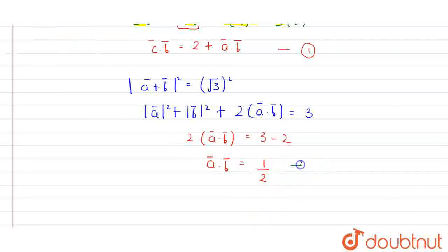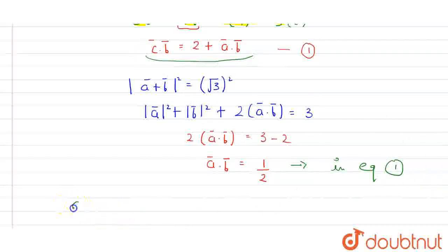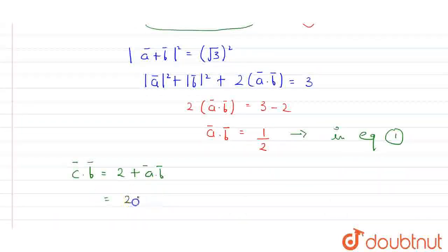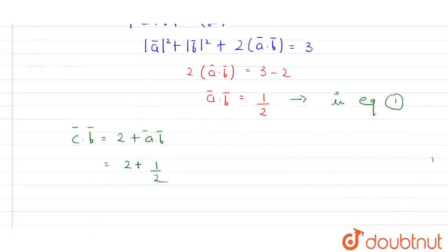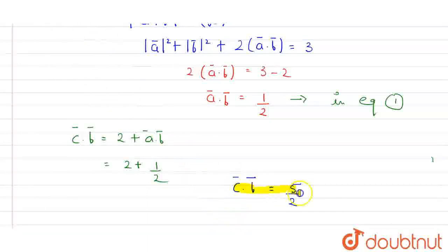Now putting this value into equation 1: C dot B equals 2 plus A dot B, which is 2 plus 1/2. So I can conclude that the value of the dot product C dot B is equal to 5 upon 2. This is the value we were supposed to find. Thank you.